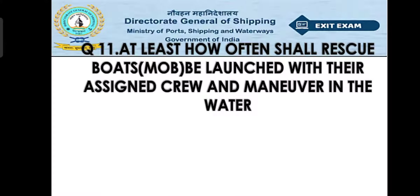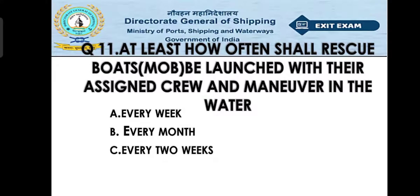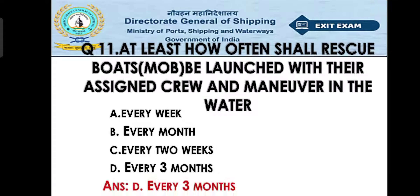Question number eleven: At least how often shall rescue boats — man overboard — be launched with their assigned crew and maneuver in the water? Option A: Every week, Option B: Every month, Option C: Every 2 weeks, Option D: Every 3 months. The right answer is Option D, every 3 months. You must not only launch the rescue boat but also maneuver it to ensure it is in good working condition, and conduct a real man overboard drill so you are prepared if someone actually falls overboard.